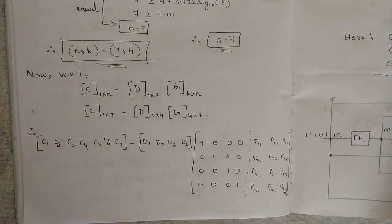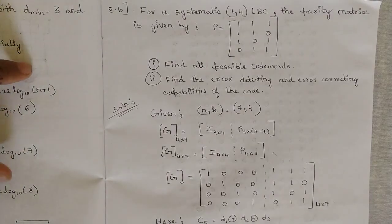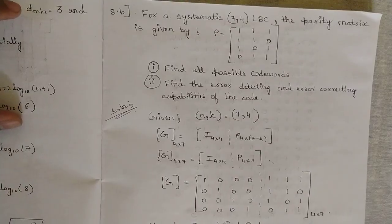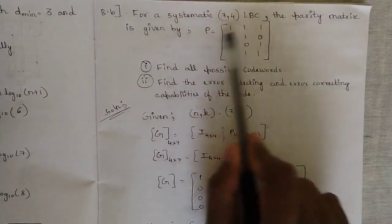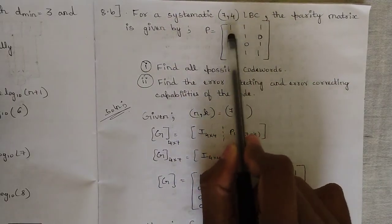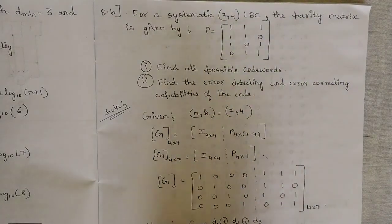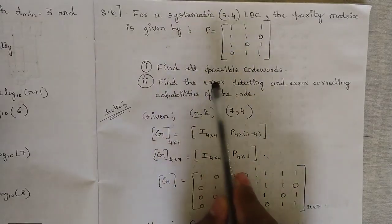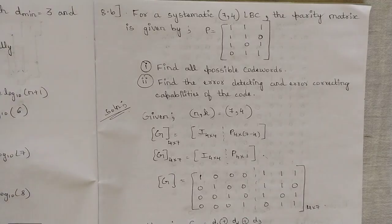Now moving to question 8b of the model paper. For a systematic (3,7,4) linear block code, the parity matrix is given as P = [[1,1,1],[1,1,0],[1,0,1],[0,1,1]]. We need to find all possible code words, then determine the error detecting and error correcting capabilities of the code.